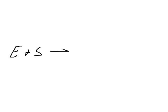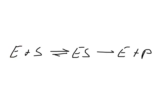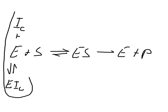We have an enzyme, we have our substrate, it forms an enzyme-substrate complex, it gives us the enzyme plus the product. For a competitive inhibitor, this interacts exclusively with the free enzyme. We can write I with subscript C to indicate it is a competitive inhibitor. It forms reversibly an enzyme-inhibitor complex — that is our competitive inhibitor.